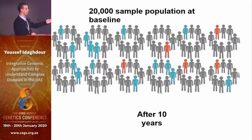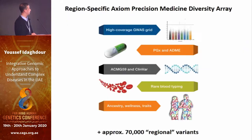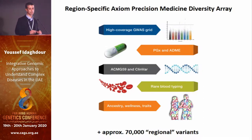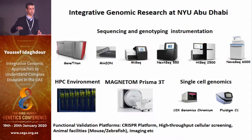The idea is that if we follow them over time, some individuals will develop diabetes or prediabetes. This is a very long-term project — the idea is to sample them again once they develop disease. For this, we developed a UAE and region-specific genotyping array with about 70,000 SNPs that are specific to the region: low frequency in other places and higher frequencies here. This requires a lot of capacity building, which many people in the UAE and the region are trying to do.